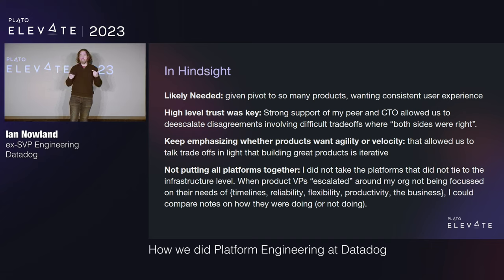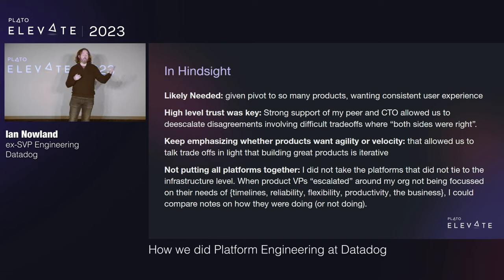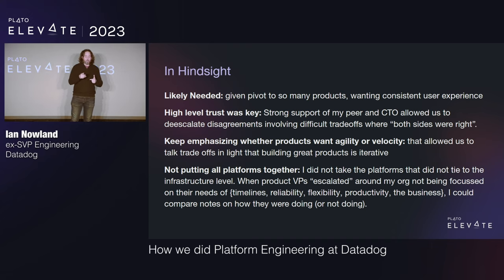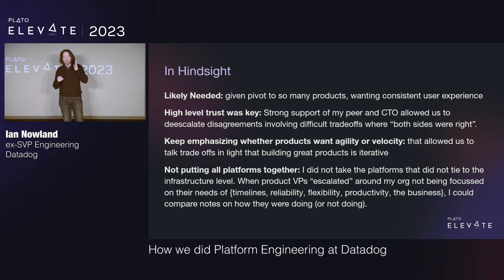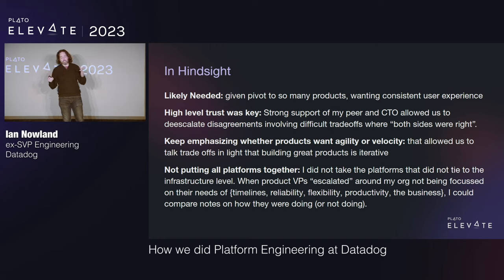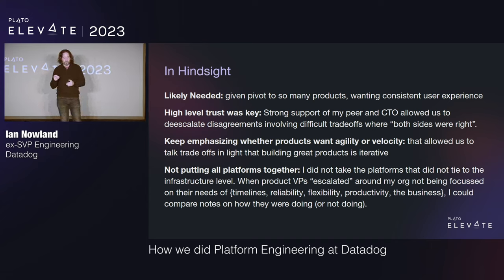My thing was to keep emphasizing: whether products want agility or velocity, they don't really know — they want both. You have to keep asking which they really want, because if I give it to you, I'm going to have to take it from somewhere else. One thing that really helped in hindsight was not putting all the platforms in the platform org. Because each of the product VPs actually had a small platform themselves, it was easy for them to relate to the fact that you can't keep everyone happy all the time. I did that for other reasons, but it turned out to be really, really good.